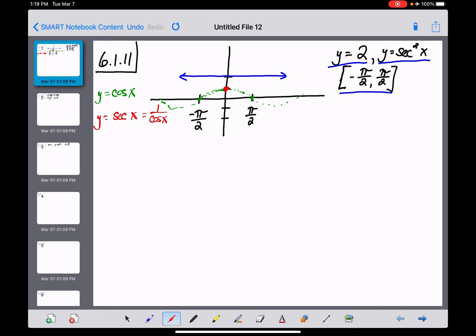Anywhere the graph of cosine equals 0, which happened at pi over 2 and negative pi over 2, the reciprocal is undefined. Those become vertical asymptotes on the graph of secant of x. So I've got vertical asymptotes right there.